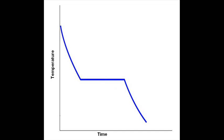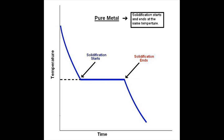First we'll have a look at the cooling curve. The two most important points for us today on a cooling curve are here, where solidification starts, and here, where solidification ends. Now this is a cooling curve of a pure metal, and in the case of the pure metal, solidification starts and ends at the same temperature, which is here. And if this were copper, for example, the temperature would be 1,083 degrees Celsius.